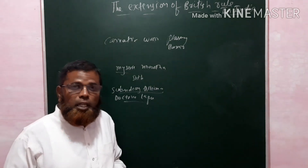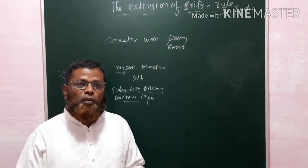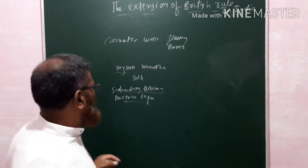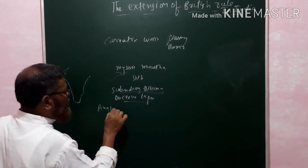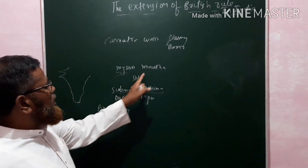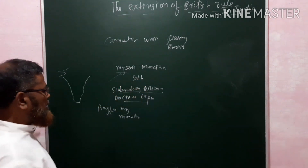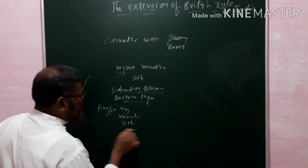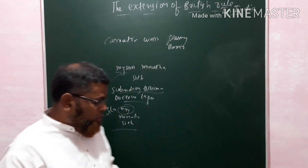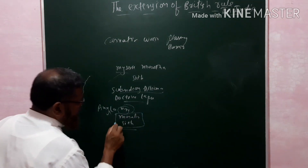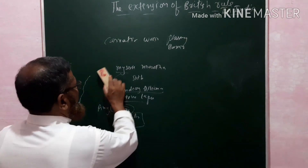When the British adopted these policies and began to extend their power, it led to controversies between the native rulers and the British, which was responsible for important wars and battles. The wars between the British and Mysore are called Anglo-Mysore Wars, those with the Marathas are Anglo-Maratha Wars, and those with the Sikhs are Anglo-Sikh Wars. Now we are going to know about the first Anglo-Maratha War.